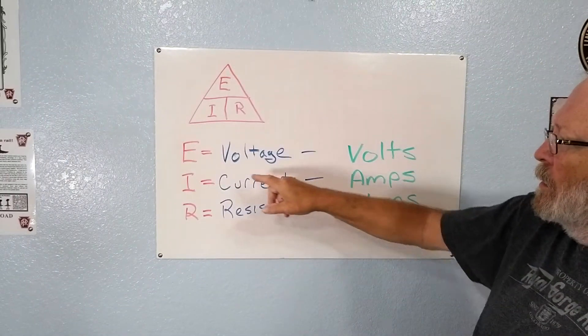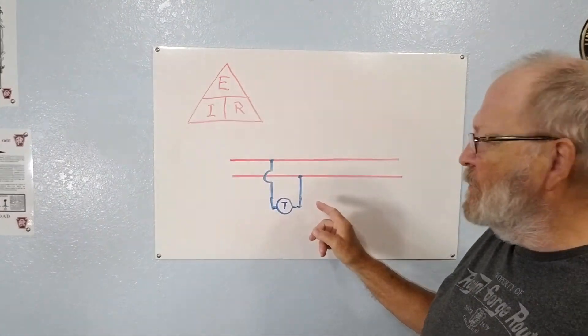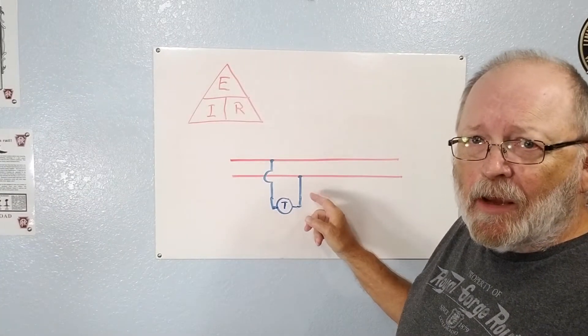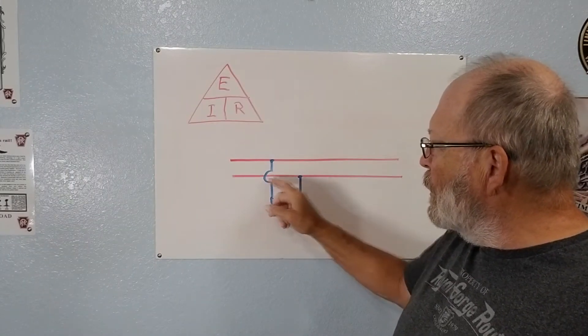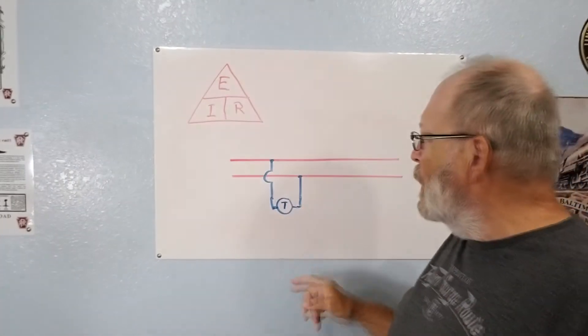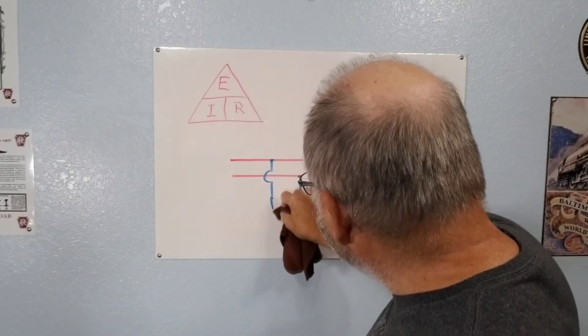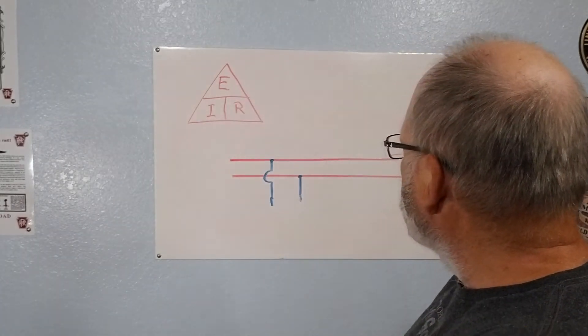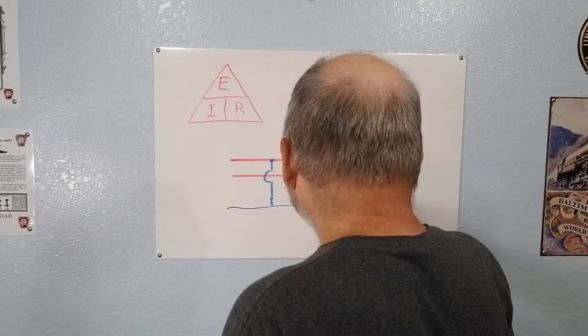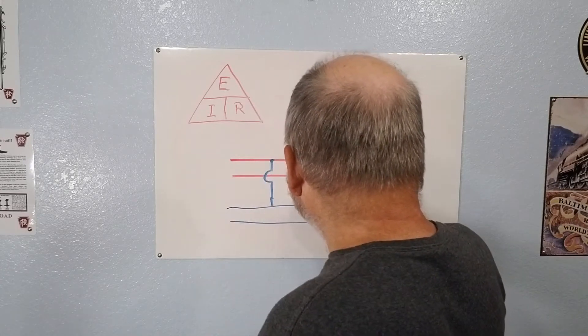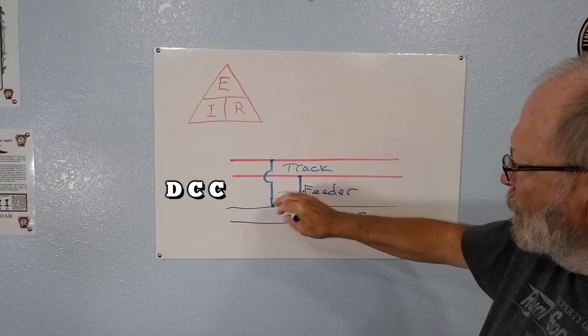You're going to see this diagram a lot about DC, about hooking up your track. These two red lines right here are your track and these two blue lines here are your leads going to your track with a transformer there. Now this is just like DCC, these are your feeder wires right there and you're also going to have your bus wires down here.